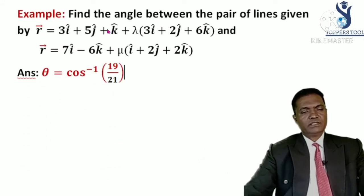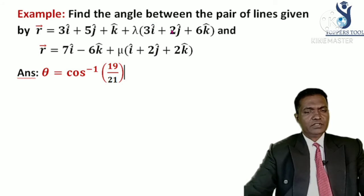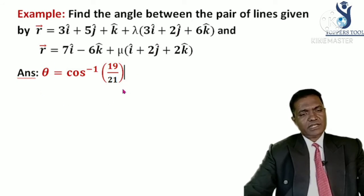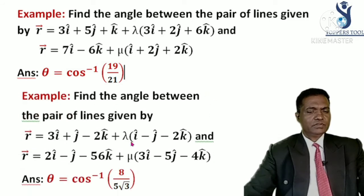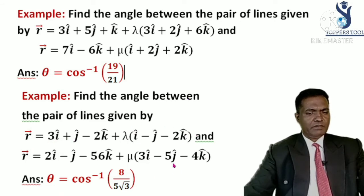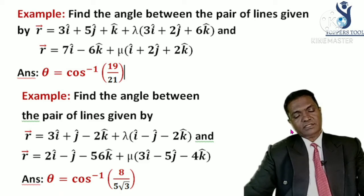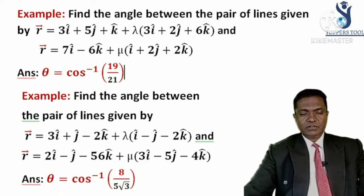Here is a similar problem for your understanding: find the angle between the pair of lines. This is similar to the previous problem — only the position vectors of the points are different, but the direction vectors B1 and B2 are the same, so you will get the same angle. Try this yourself. There is also one more example with different direction vectors — please try it; the answer is given for you to verify.